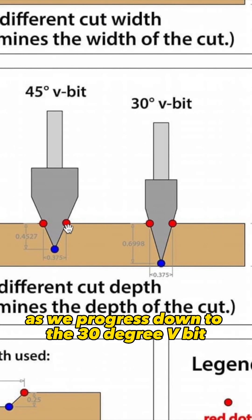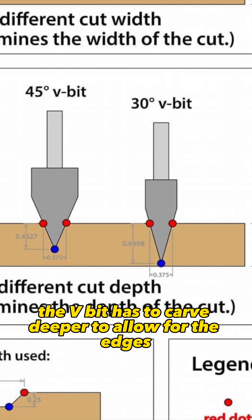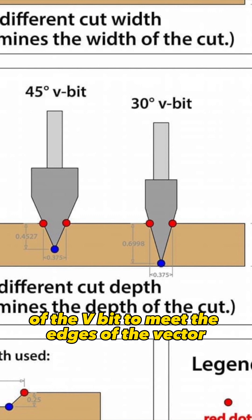As we progress down to the 30-degree v-bit, the v-bit has to carve deeper to allow for the edges of the v-bit to meet the edges of the vector.